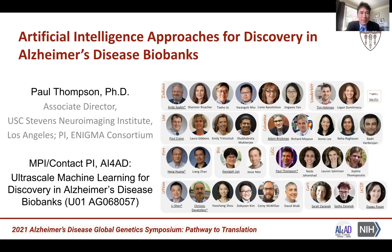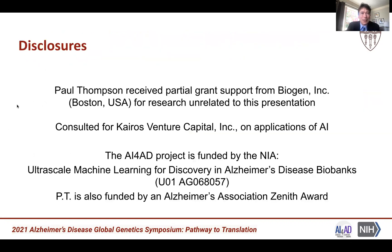Hi, everyone. My name is Paul Thompson, and I'm going to tell you a little bit today about artificial intelligence approaches for discovery in Alzheimer's disease biobanks. This is joint work with members of the AI4AD consortium, a national initiative to apply artificial intelligence methods to questions related to Alzheimer's disease. We received funding from Biogen and Kairos Venture Capital for work unrelated to this presentation, and also from the NIA and the Alzheimer's Association for work related to what I'll talk about.